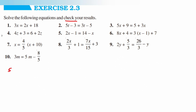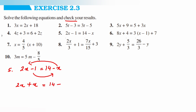The fifth question is 2x minus 1 is equal to 14 minus x. Transpose minus x to the left side and minus 1 to the right side: 2x plus x is equal to 14 plus 1, so 3x is equal to 15. Therefore x is equal to 15 upon 3, which cancels to give x is equal to 5.